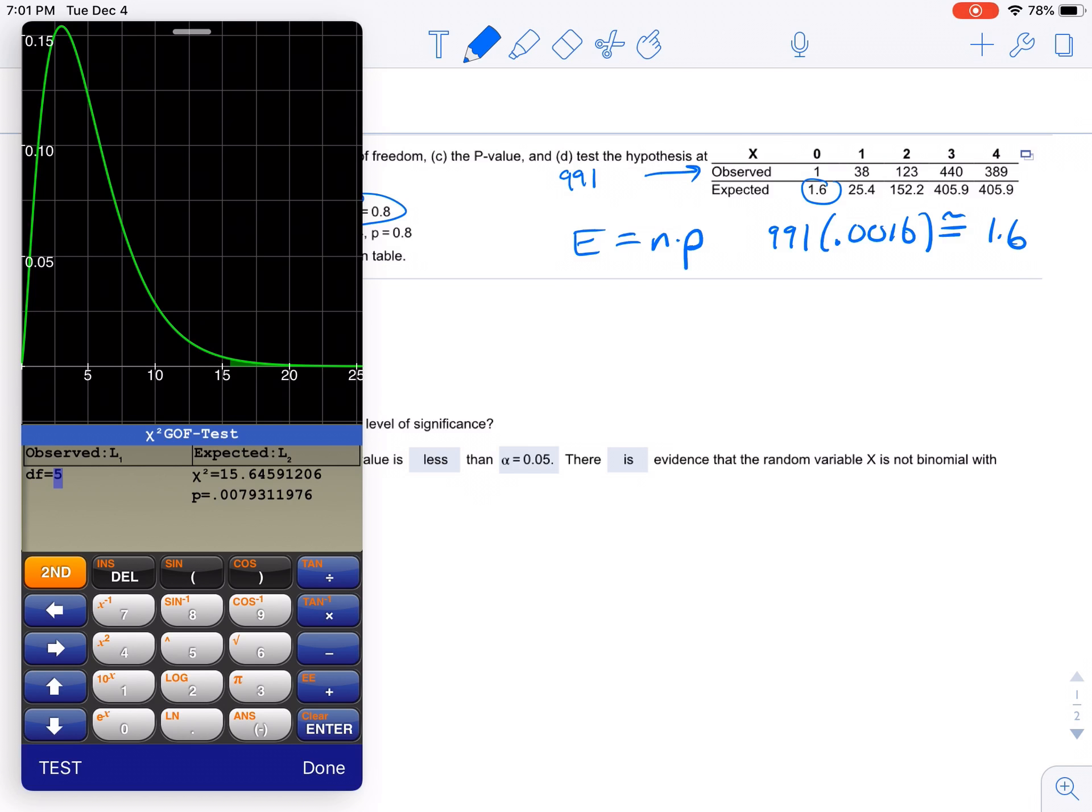Degrees of freedom would be 4, because it's k minus 1. So if we count these, we have 0, 1, 2, 3, and 4. That's five categories. So that should be 4.